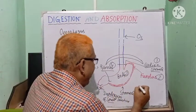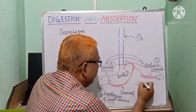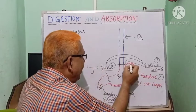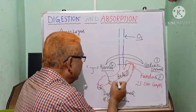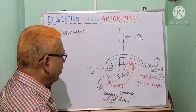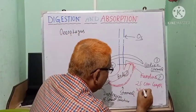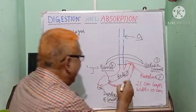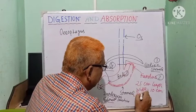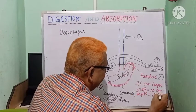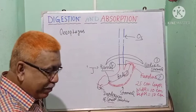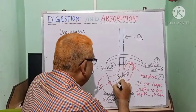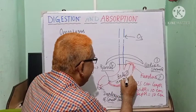Measurements of the stomach: it is 25 cm in length, depth 10 cm, and the capacity of the adult stomach is about 1500 ml.